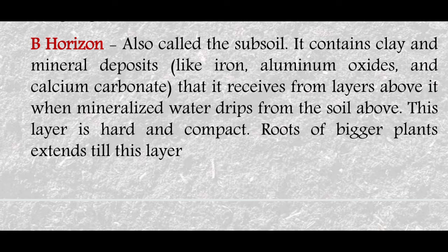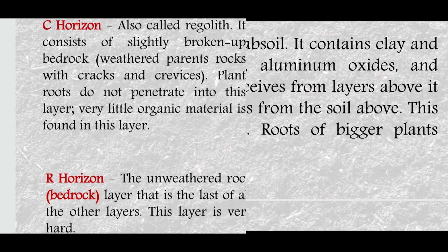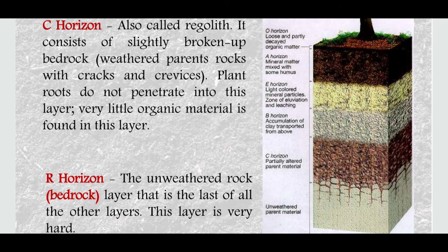The next layer is the sub-soil, also called the B-horizon. Here, material is deposited by circulation from above. Only about 1% of bigger plant roots can penetrate into this layer. Below this is a harder, more compact layer called the regular or parent material layer.